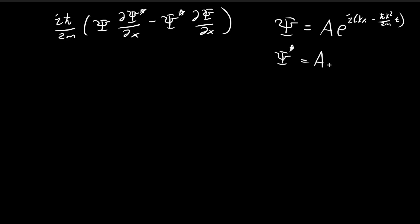The conjugate will be equal to something like this — you have e to the power of i times something, so if you take the conjugate you just put a negative sign in front of the i. The conjugate of ψ is just equal to putting a negative sign in front of the i, and we also need to apply the conjugate to the constant A. This whole expression will be the conjugate of ψ.